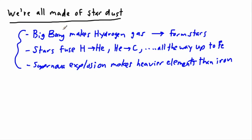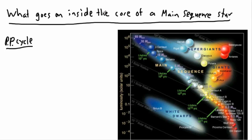We can go a little bit further and talk about what goes on inside the core of a main sequence star. Remember what main sequence means: that's a star that is happily fusing hydrogen to helium. These are the stars in the main sequence.